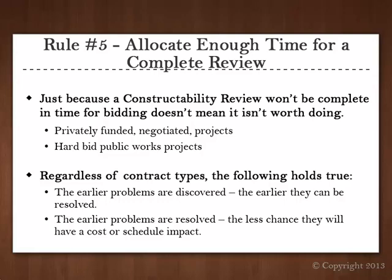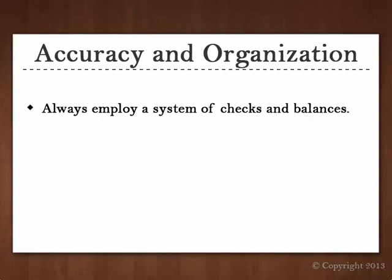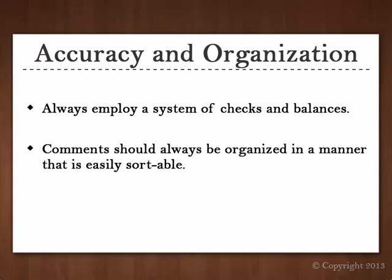That wraps up the top five rules. Now let's talk about how to put a review together and manage the process. Accuracy and good organization of review comments are crucial to managing the process. To be perfectly honest, constructability reviews that are inaccurate or poorly organized can be a complete waste of time because they aren't viewed by the design team as professional or even credible. Always employ a system of checks and balances. When I perform a review, I always take two passes through the documents: first, I review the drawings, specs, and other documents and make handwritten notes all through them; second, I go back through all my notes to log the comments into a written report, done with a plain and simple Microsoft Excel spreadsheet. This second pass is a good way to back-check my comments because after reviewing all the documents I am much more educated on the project.